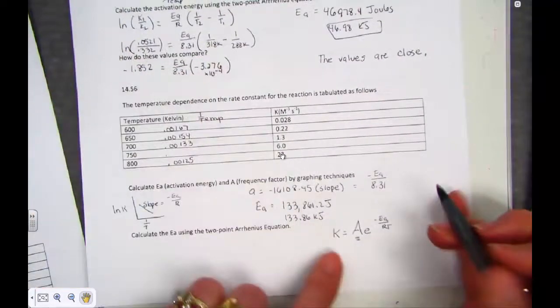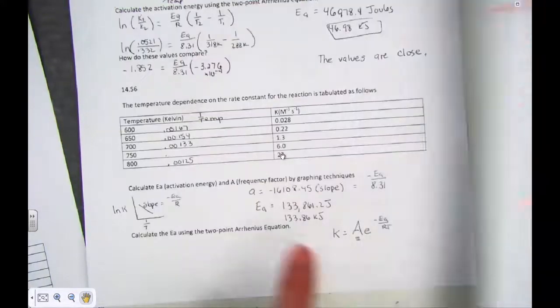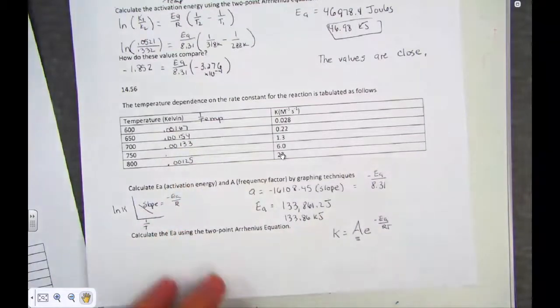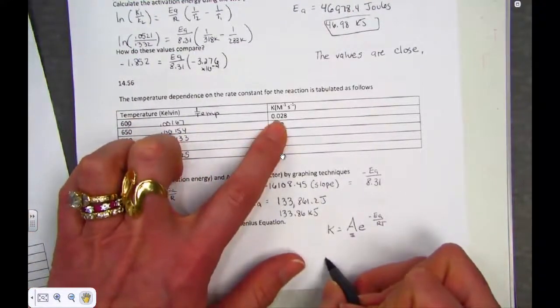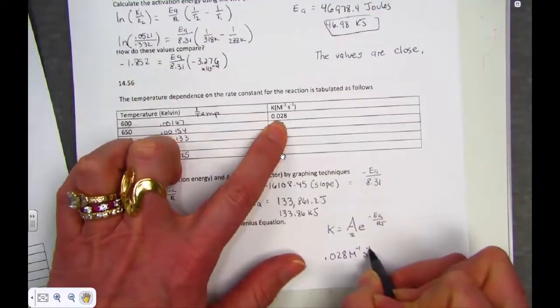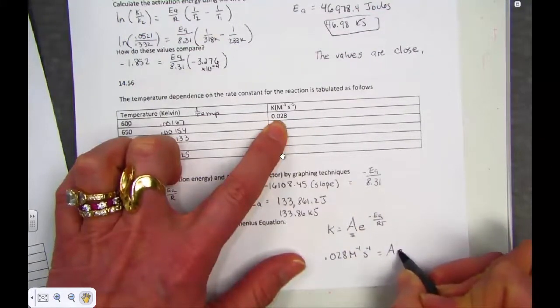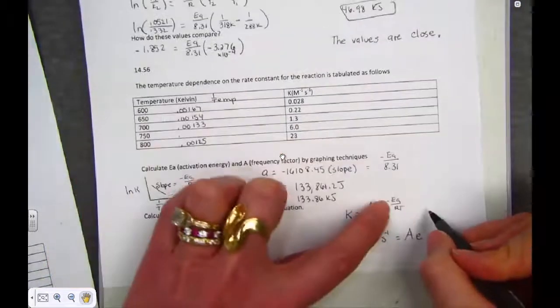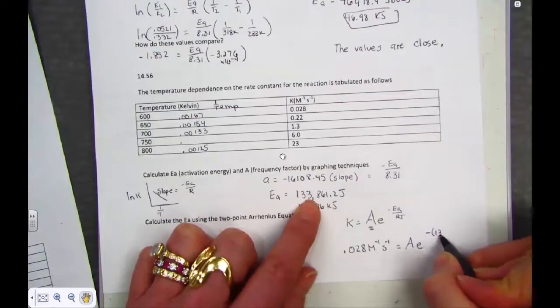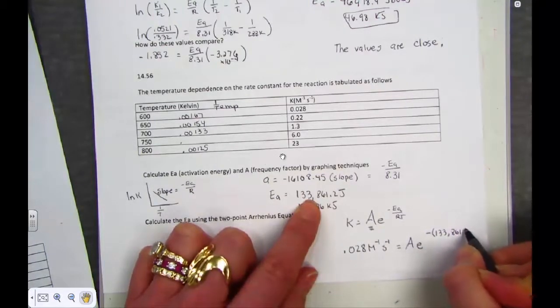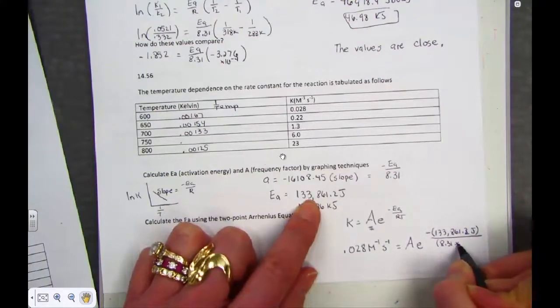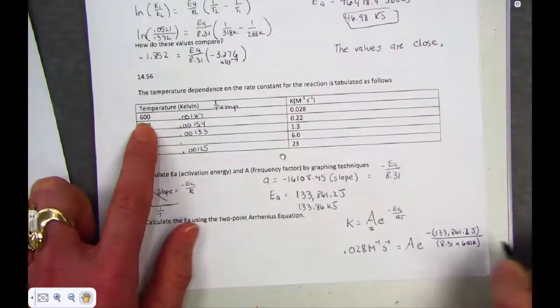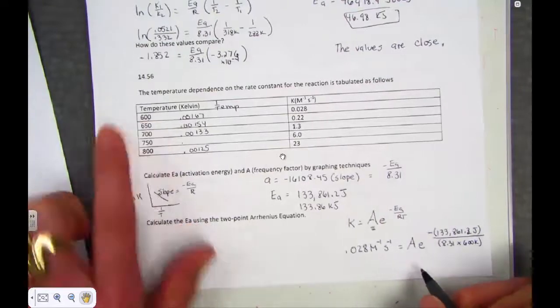So, we have a choice. The frequency factors are indeed relatively constant. You might find a slight variance between any of the trials, but not significant. So, let's pick trial 1 for no other reason than it's written first. It's k constant, 0.028. I'm solving for A. E is being raised to the negative Ea. It has to be in a joule. So, negative 133,861.2 joules. Over R, 8.31 times that Kelvin temperature, 600 K units. We're going to pull out A, the frequency factor.